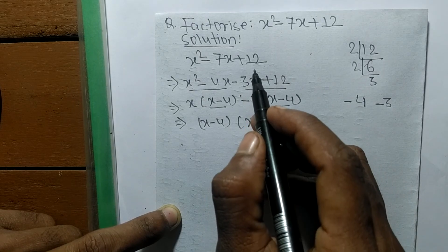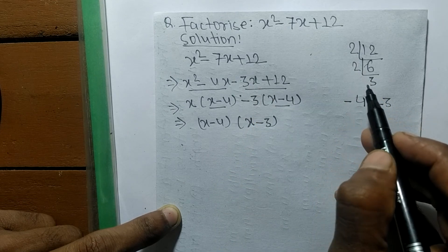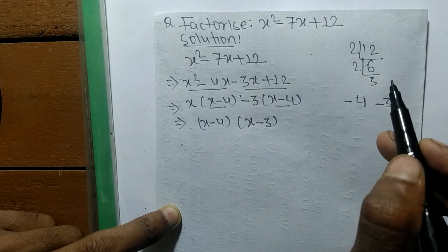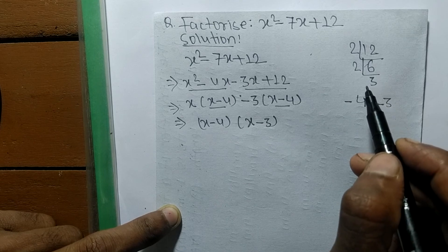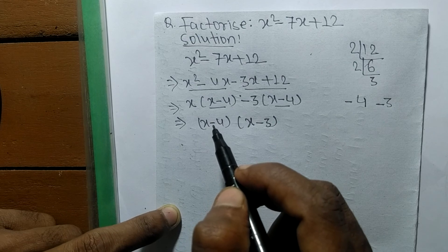After that, by multiplying the numbers of the prime factors, you have to make such a number that by adding them you get the middle number. So this much for today.